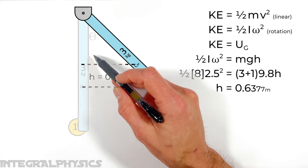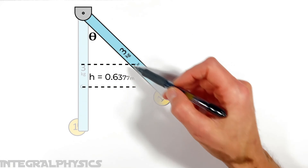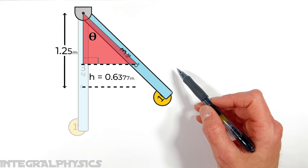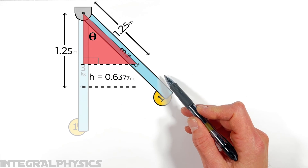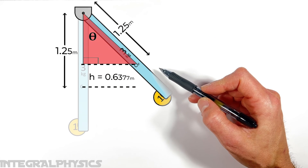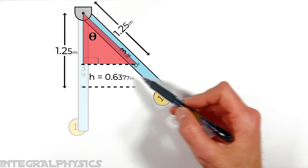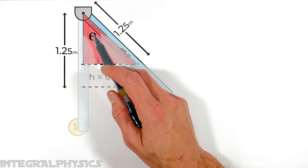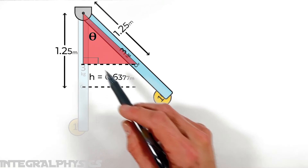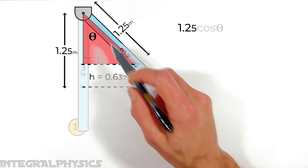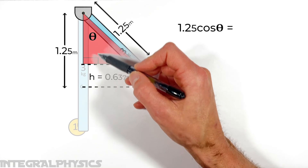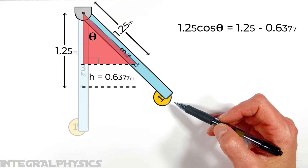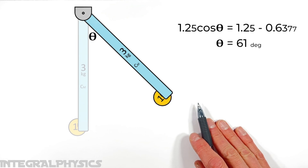This is an increase in height, not yet an angle. Looking at this as a right triangle, the center of mass initially sits 1.25 meters beneath the pivot. When it swings backward it gains 0.6377 meters of height. The center of mass is still 1.25 meters from the pin, forming a right triangle. The adjacent side relative to the angle equals 1.25 times the cosine of that angle, and also equals 1.25 minus 0.6377. Solving for the angle, the rod and ball swing backward 61 degrees.